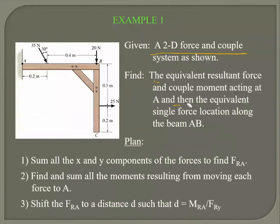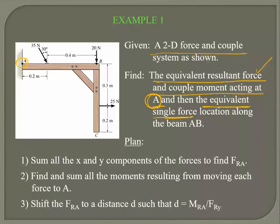We need to find the equivalent resultant force and couple moment acting at A, and then find the equivalent single force. First we find the resultant force, then we find the moment acting at point A, and then we replace the moment with a single force so the effect is the same.